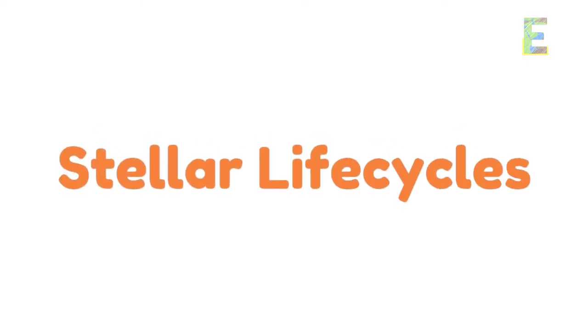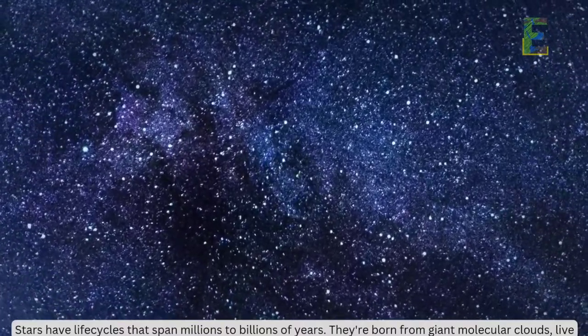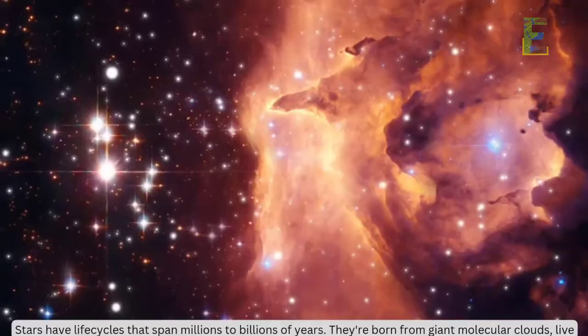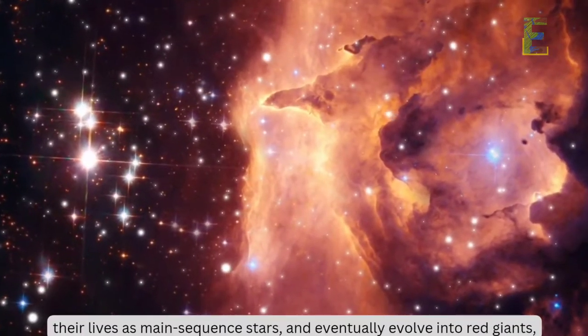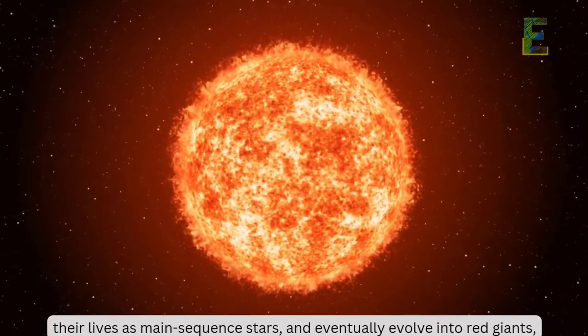Stellar life cycles: Stars have life cycles that span millions to billions of years. They're born from giant molecular clouds, live their lives as main-sequence stars, and eventually evolve into red giants, supernovae, or even black holes.